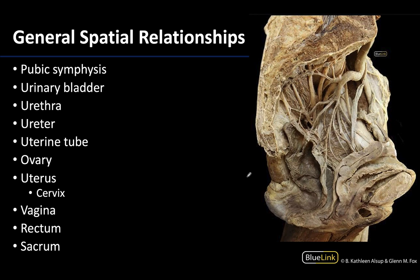I always like to start with the osteology or the bones because they help me get oriented as to what is anterior and what is posterior. You can see where the pubic symphysis is located right here, giving you an idea that this is the anterior portion. And you can see portions of the sacrum here — it's been cut so you can look into the spongy bone — and you can even see a bit of the coccyx right here, so now we know that this is mostly posterior.